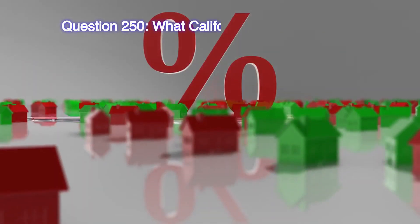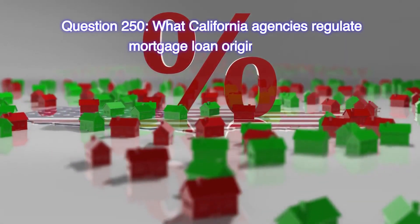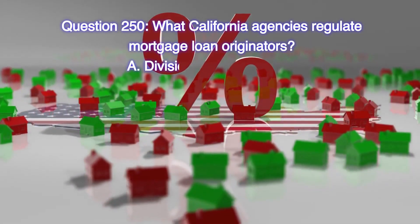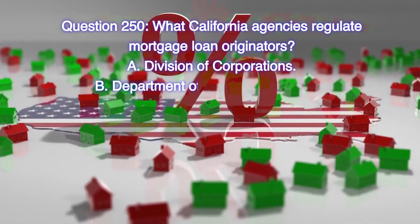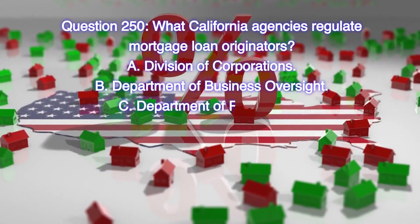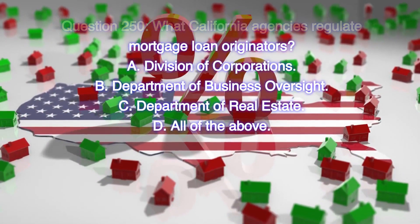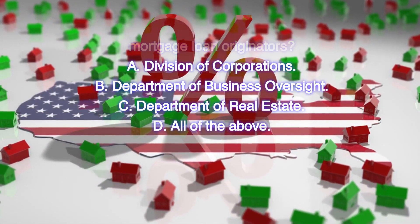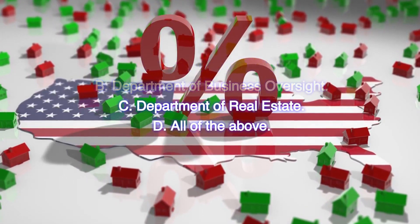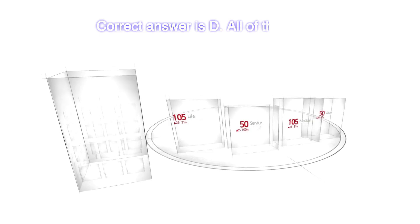Question 250: What California agencies regulate mortgage loan originators? A) Division of Corporations, B) Department of Business Oversight, C) Department of Real Estate, D) All of the above. Correct answer is D, all of the above.